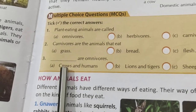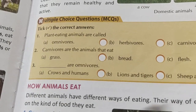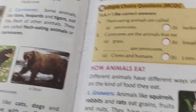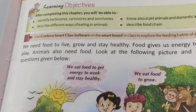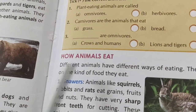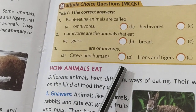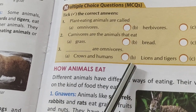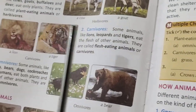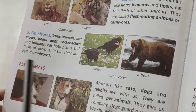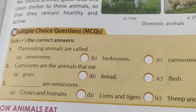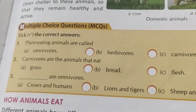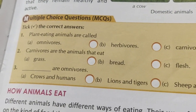So students, today we will study this much only, and tomorrow we will complete the chapter. You have to learn all the important words and definitions: herbivores, carnivores, omnivores, pet animals, and domestic animals. Revise all these questions and see you tomorrow with the further part. Have a good day.